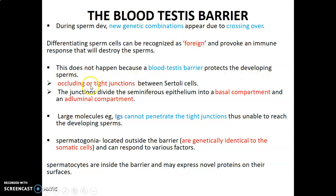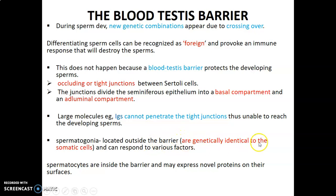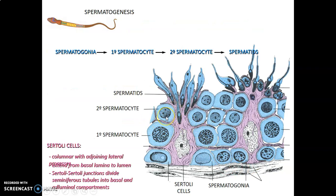So what forms the blood-testis barrier? It's formed by occluding tight junctions between the Sertoli cells. These junctions divide the seminiferous epithelium into a basal compartment with the immature spermatocytes and an adluminal compartment with more mature spermatocytes. Large molecules such as immunoglobulins are not able to reach the developing sperms. Spermatogonia are located outside the barrier and are genetically identical to the somatic cells. Spermatocytes are inside the barrier and may express novel proteins on their surfaces.